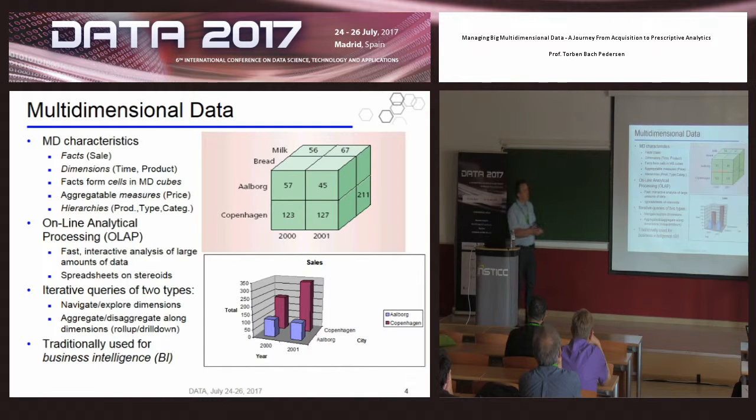Then we have dimensions which characterize the fact. These could be time or product or location. And then the facts, they form cells in multidimensional cubes. So here we have a three-dimensional cube. For sales, we have time, we have city, we have product. And inside, we have little numbers. These are called measures. So these are the properties that we want to optimize. That could be the price or the number of units sold or whatever.